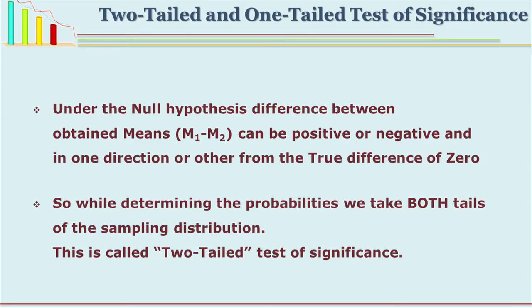When we see the difference between two means and want to find out whether it is significant, we also must know whether our distribution is one-tailed or two-tailed. Under the null hypothesis, if the distribution is normally distributed, mean 1 minus mean 2 can be on the positive side or the negative side. So this is two-tailed — both extremes are in the distribution and the researcher is interested in the difference either on positive or negative side. This is called a two-tailed test of significance.